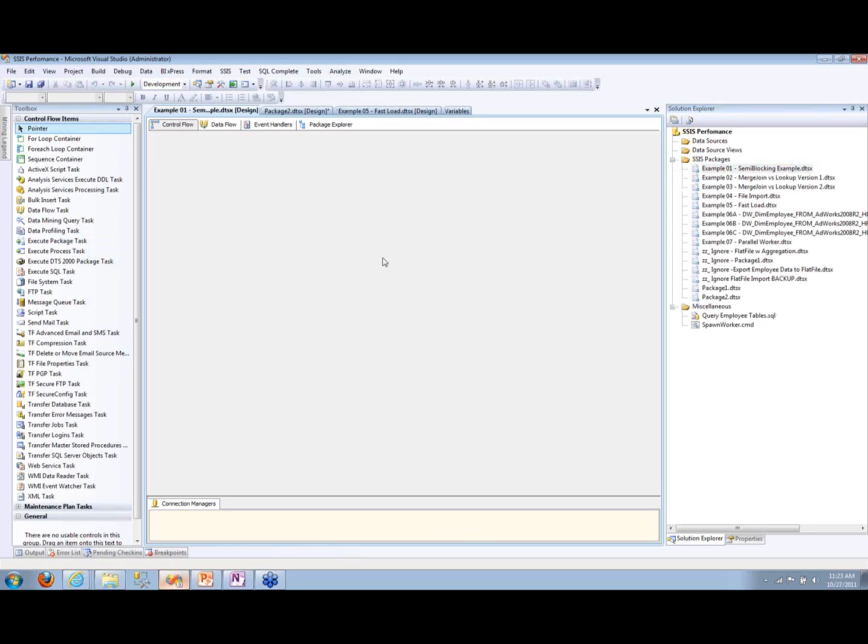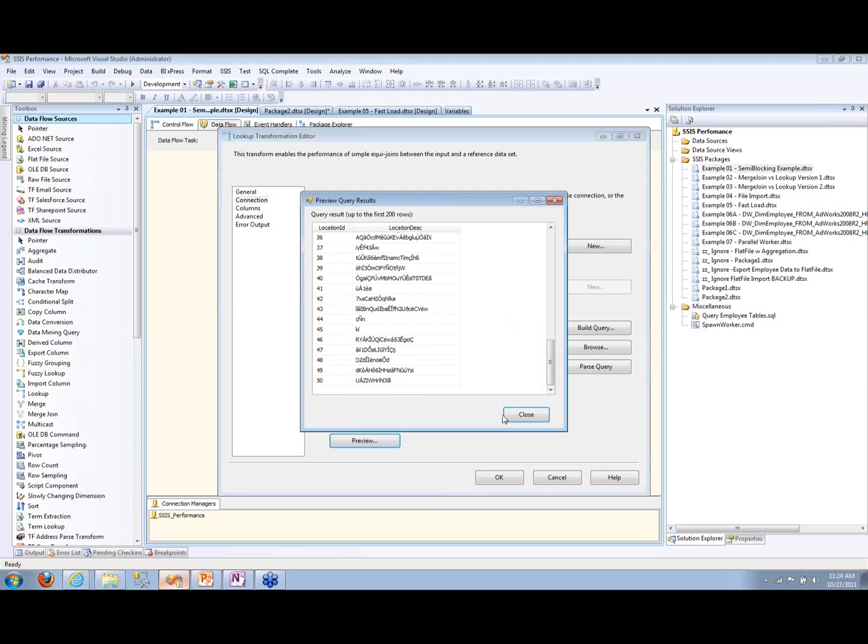Very straightforward data flow task. Data comes down, it's using a lookup transformation. The lookup transformation is using full cache, meaning it's going to load all the lookup information completely into memory. I'm just doing a simple lookup here. It's location ID and location description on the fly. But there's only 100 records in here, actually I think there's only 50 records in this particular.